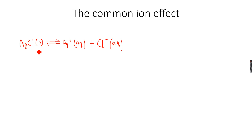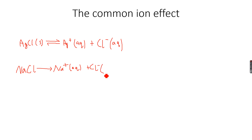What happens if I add NaCl to this saturated AgCl solution? NaCl completely dissociates to form Na⁺(aq) + Cl⁻(aq). So when NaCl is added, the concentration of Cl⁻ ions increases. From Le Chatelier's principle, when a change is made to a system in dynamic equilibrium, the system will try to oppose that change.